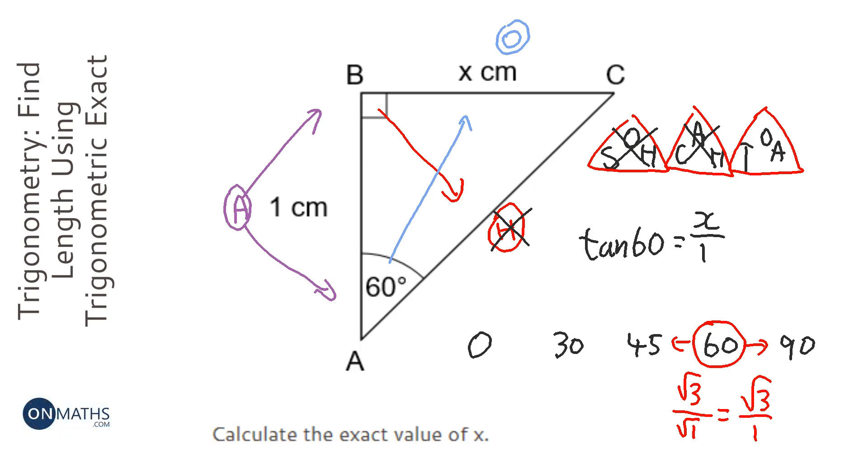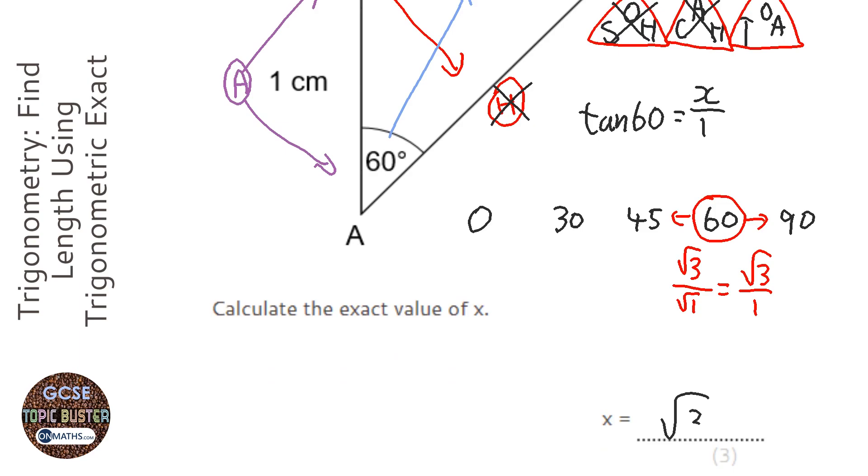So, to find out the value of X, well, if tan 60 is the same as root 3 over 1, and we've got the adjacent as 1, then X needs to be root 3.